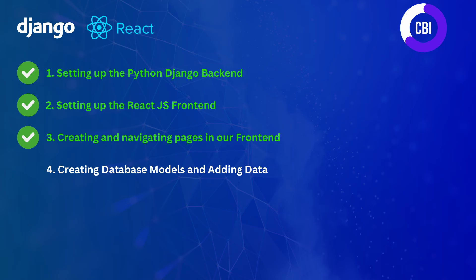That's all we're going to be doing for this video. I showed you how we can enable page navigation by using React Router DOM and how we can create a basic navigation menu with components from Material UI. In the next video we're going to continue by creating some database models and adding data inside of our backend, so we can experiment with charts and display data on our frontend. I hope you enjoyed this video — if you did please leave a like and subscribe. Hope to see you in the next one. Bye bye.